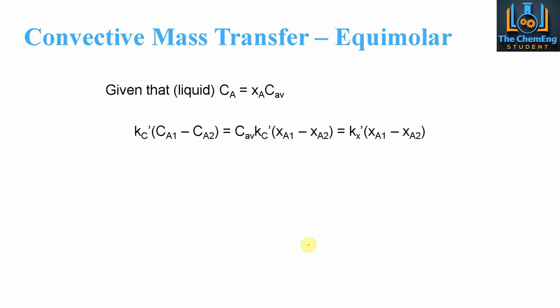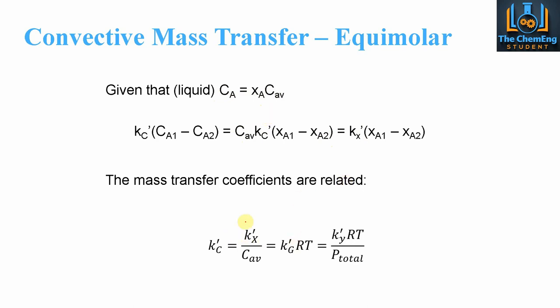For a liquid phase, we cannot use partial pressures directly. Analogous to Dalton's Law, the concentration of A equals the mole fraction of A multiplied by the average concentration. The principle is that K'x equals C_average multiplied by the local mass transfer coefficient — the same relationship structure as before. The key difference is that pressures apply predominantly to ideal gases, not liquids; for non-Newtonian fluids, pressure effects can come into play.